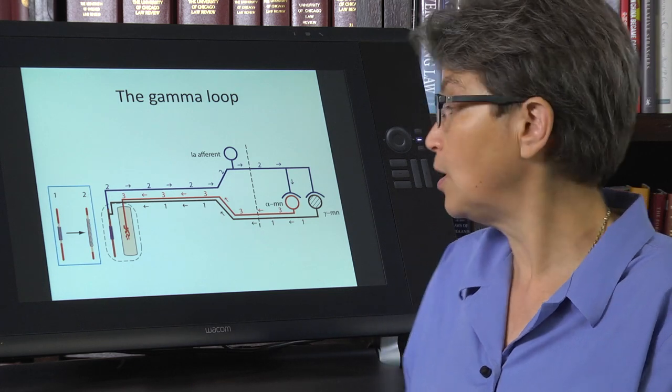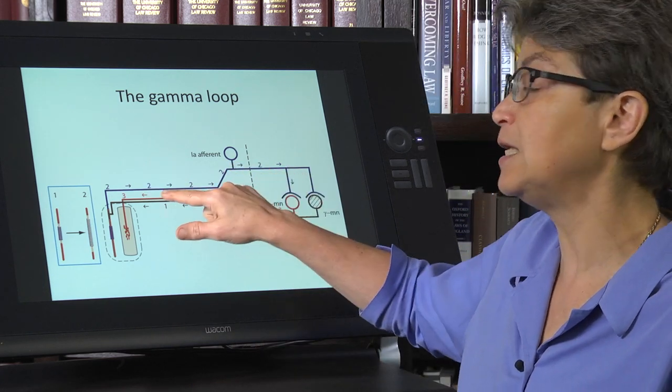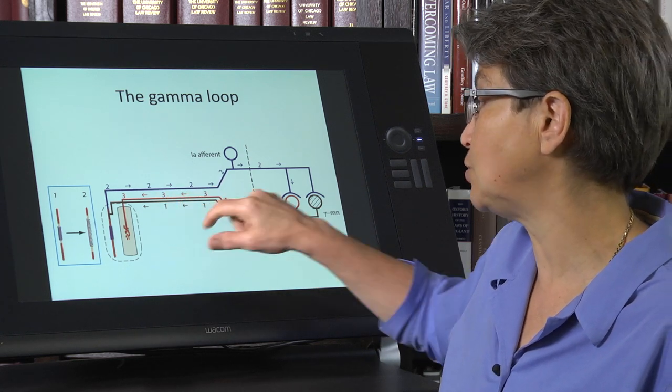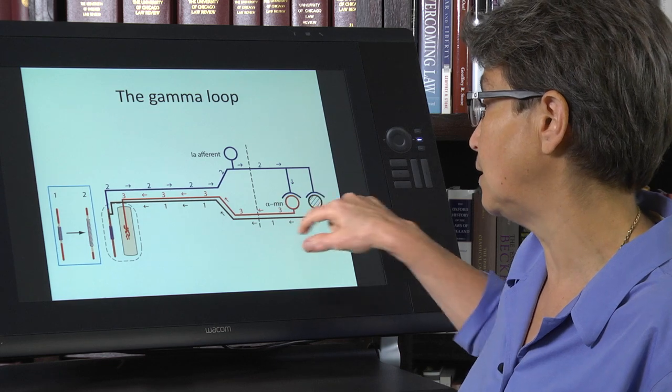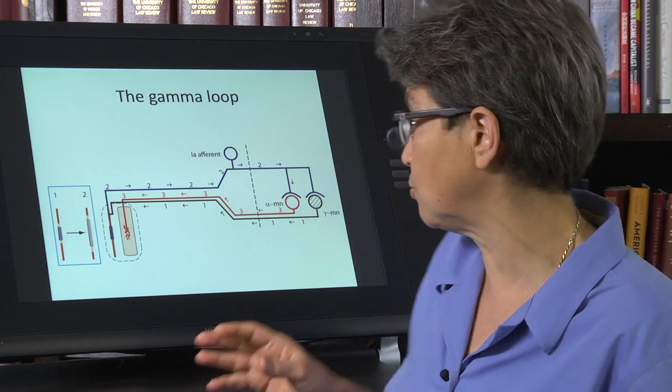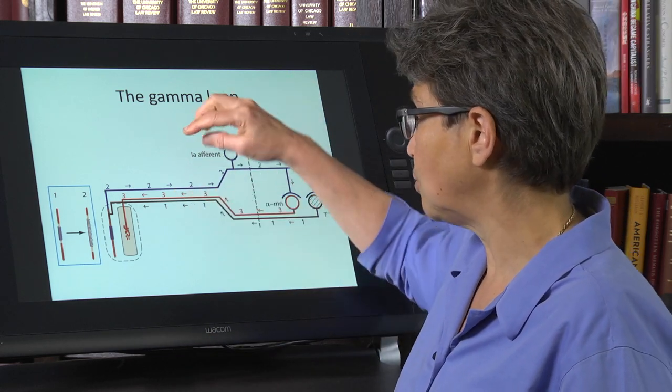And as it turns out, the threshold for activation for 1A afferents is lower than the threshold for activation of the alpha motor neurons, which is the only one we really care about. The motor neurons in general.